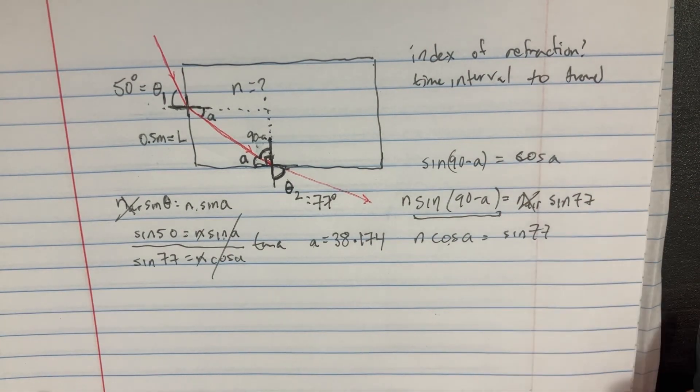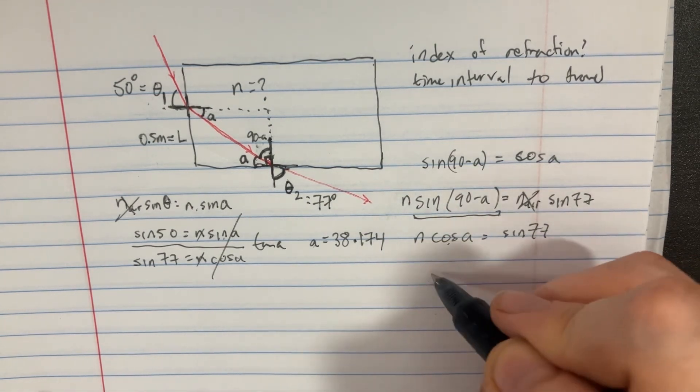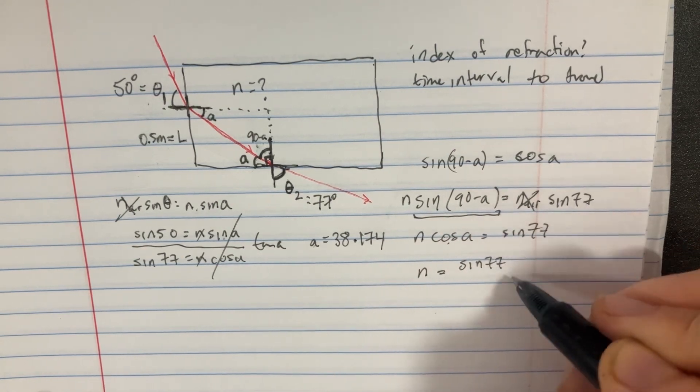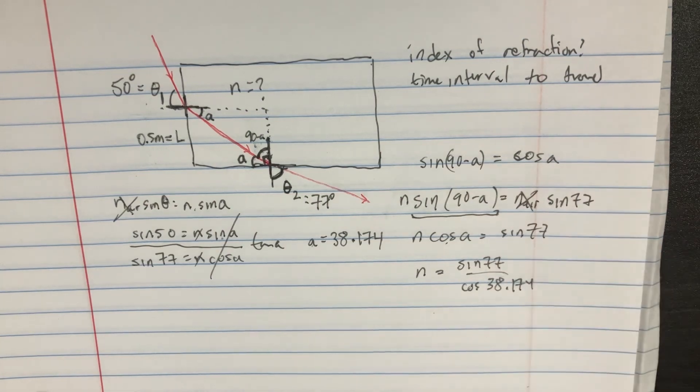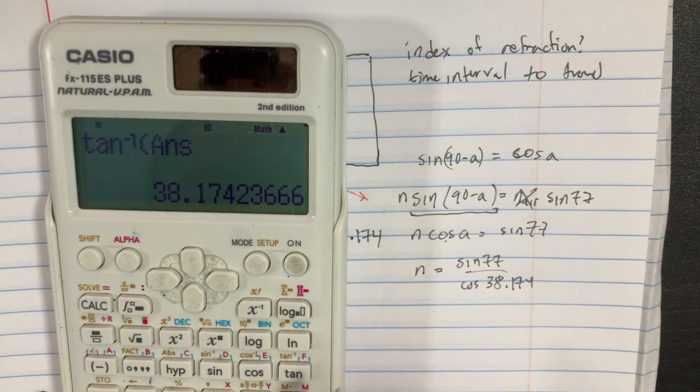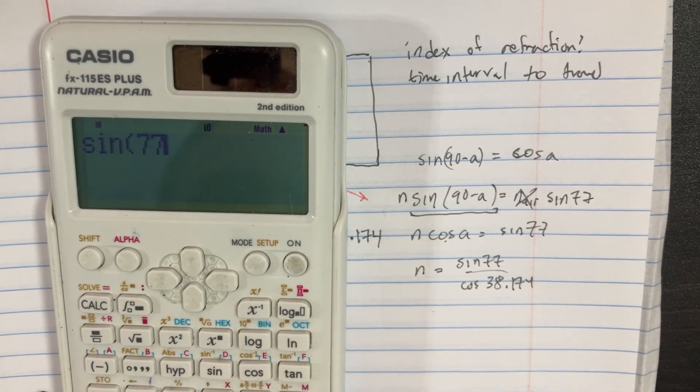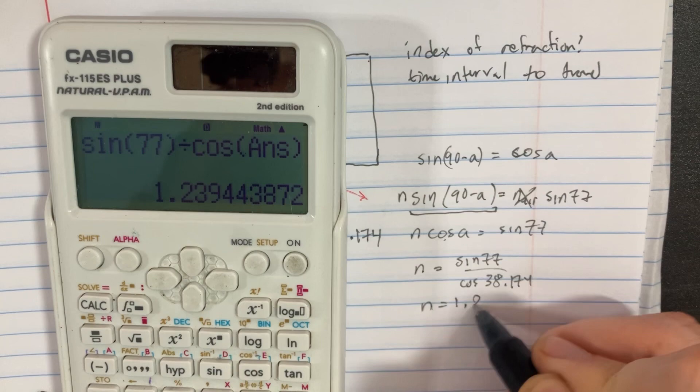With this information, we should be able to plug it back into any one of these equations. So we'll just do it with this one here. So n would be equal to sine of 77 over cosine of that angle, 38.174. So we can just go ahead and solve for that. So that would be the sine of 77 divided by cosine of the angle we found. And so we can see that n would be equal to 1.24.